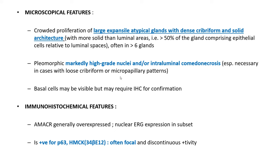Some textbooks say this dense cribiform pattern must be found in at least six adjacent glands, though most cases show more. If you do not have a dense cribiform and solid architecture, the definition also allows for a loose cribiform or micropapillary architecture, but in that case you must have either high-grade nuclei or comedonecrosis within the gland. Basal cell layers should be preserved, but often not visible to the naked eye; you must use high molecular weight keratin combined with p63 to establish at least patchy preservation of the basal cell layer.